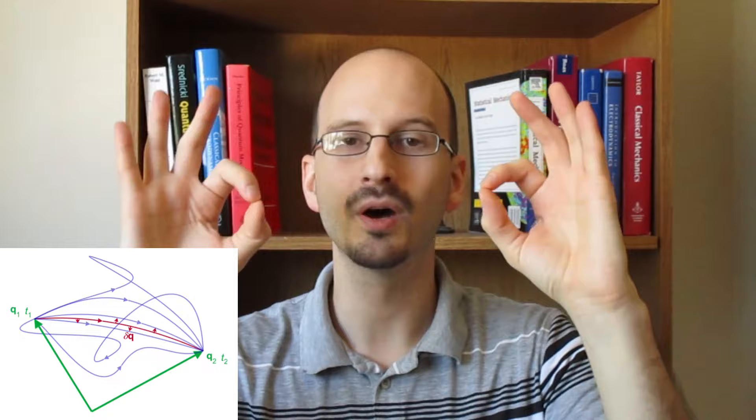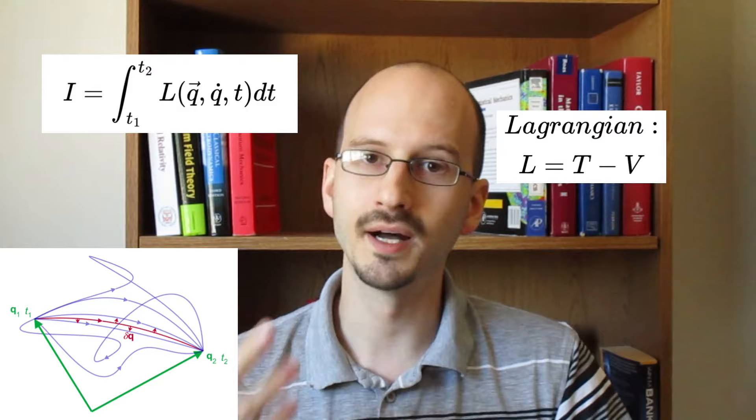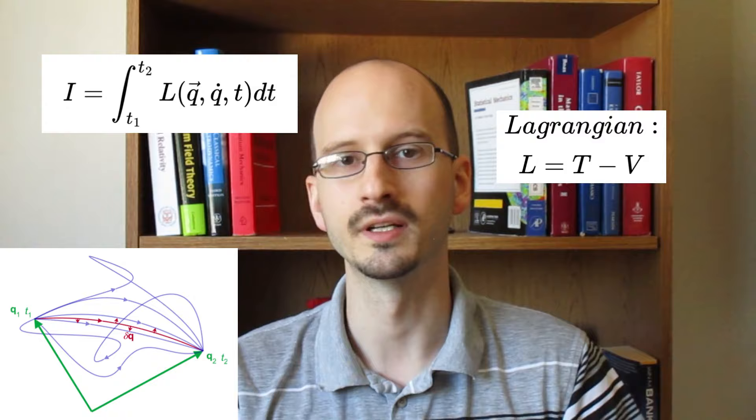The action is equal to the amount of Lagrangian picked up over every infinitesimal motion along that path. So you chop down the path into an infinite number of pieces and you add up every little piece of Lagrangian along that path. That gives you an integral that looks like this. And as a reminder, the Lagrangian is equal to the kinetic energy minus potential energy. So how does this help us? How is this useful?